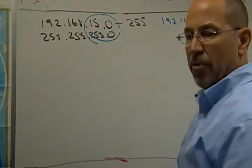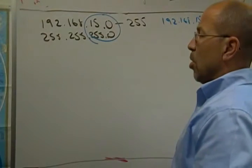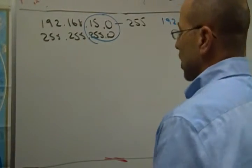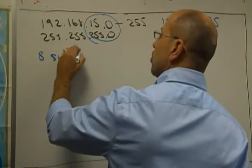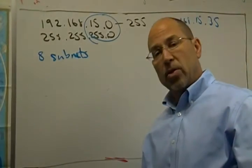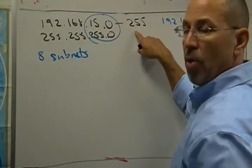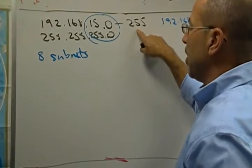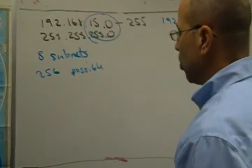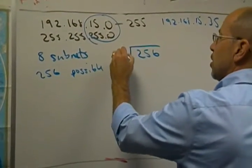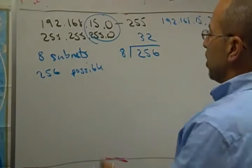Let's do an example. Let's say I want to break this network up into eight subnets — maybe eight departments or eight groups. The range of possible addresses we have is 0 to 255, which is 256 possible addresses. So 256 divided by 8 gives me 32. This means I'm going to create 8 subnets with 32 hosts in each one.